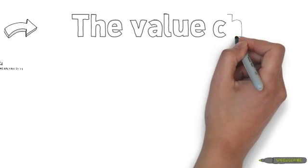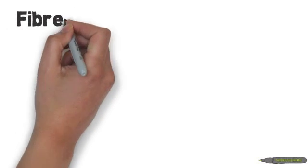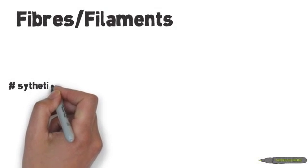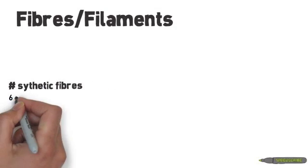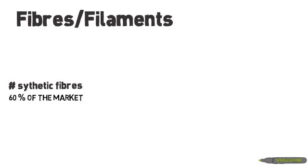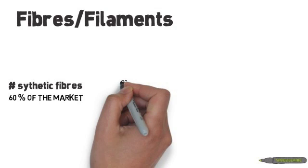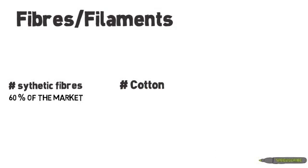Let's talk about the value chain in the textile industry. First, we have the basic raw material, which we can call fibers or filaments. Synthetic fibers, for example Lycra, contribute 60% of the total market. Cotton, which is the most widely used natural fiber, is 38% of the total market.